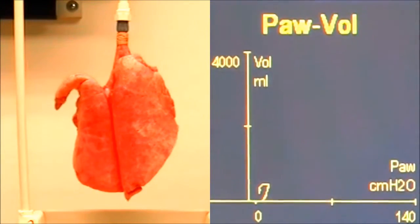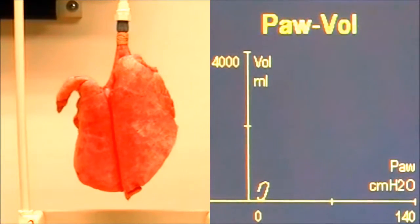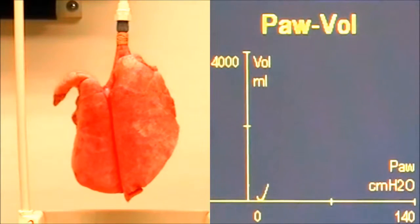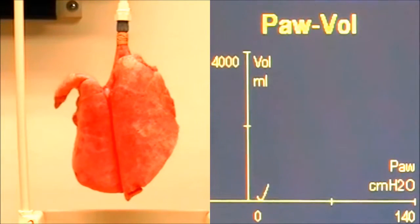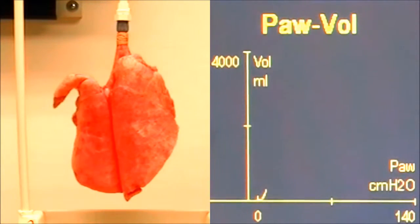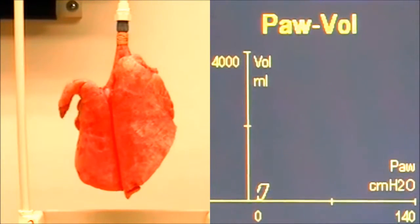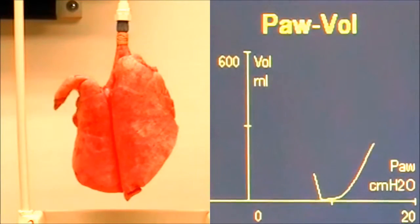Give them a few breaths at the new PEEP level. This is going to do several things. The recruitment breath is going to open up the atelectatic areas, allow for nitrogen to get back in there, and stimulates type 2 pneumocytes to release surfactant. On a stagnant tidal volume, your type 2 pneumocytes basically go to sleep and stop producing surfactant, which is going to compound on the atelectasis and make the lungs less compliant.